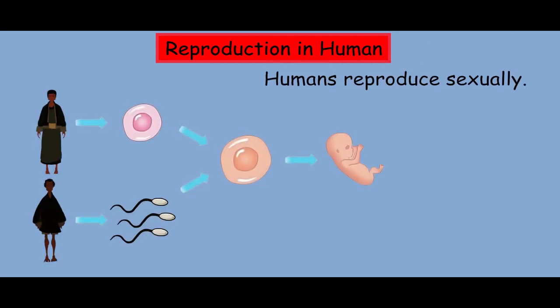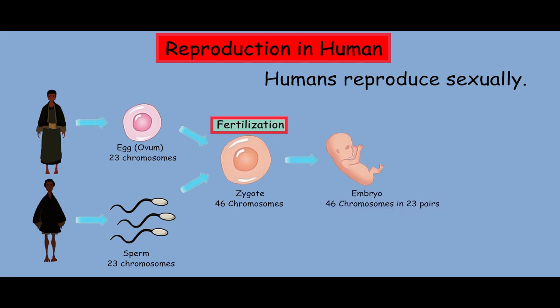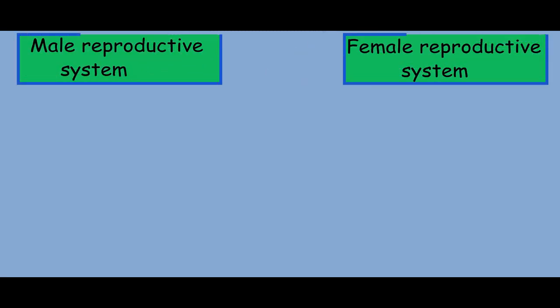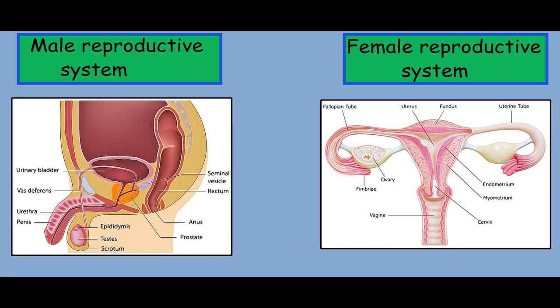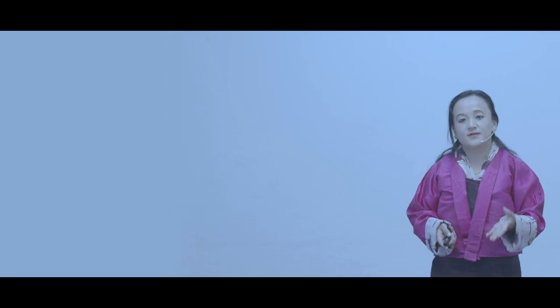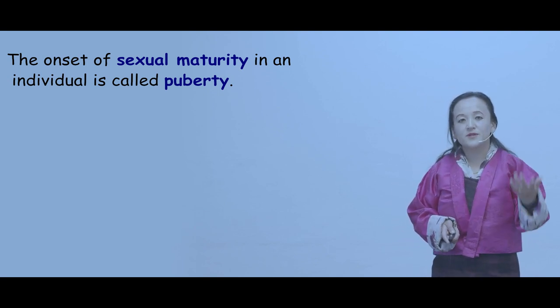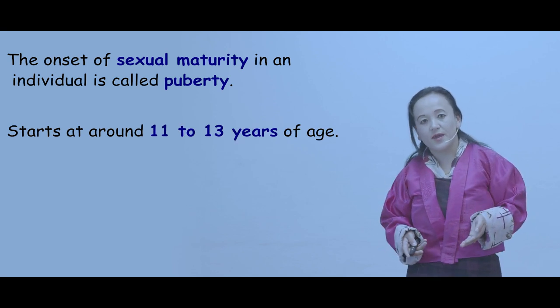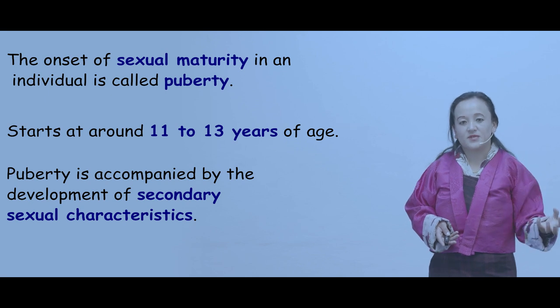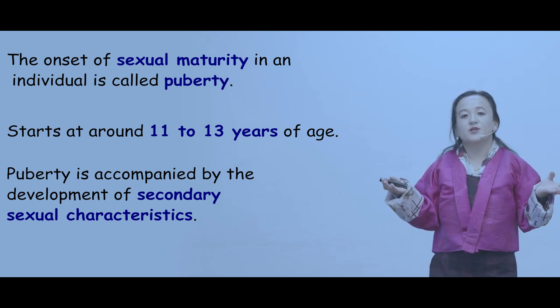Let us look at how humans reproduce. Humans reproduce sexually. It starts with the production of gametes in the reproductive organs, followed by fertilization and development of the fetus. Human beings are unisexual organisms, which means that the male and female have separate reproductive systems. The onset of sexual maturity in individuals is called puberty, which usually starts around 11 to 13 years of age, and is accompanied by the development of secondary sexual characteristics.